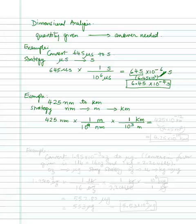In one meter there are ten to the power of nine nanometers because the meter is the larger quantity, and in kilometers to meters, the kilometer is the larger quantity. Go ahead and take out your calculator, or in short form: 425 times ten to the power of negative twelve kilometers. For multiplications you add the exponents — nine plus three is twelve — and since this was in the denominator, it becomes negative. Converting to proper exponent format: 4.25 times ten to the power of two, so the final answer is 4.25 times ten to the power of negative ten kilometers.